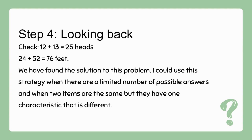Now let's look at the final step — looking back. We check our answer: 12 plus 13 animals gives us 25 total. Then checking the feet: 24 plus 52 equals 76 feet. We have found the solution! You can use this strategy when there are a limited number of possible answers and when two items are the same but have one characteristic which is different.